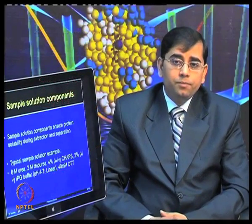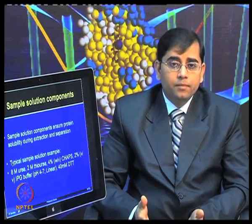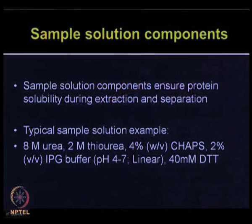The sample solution components ensure that protein solubility is good during extraction and separation. A typical sample solution for gel-based 2DE application includes 8 molar urea, 2 molar thiourea, 4% CHAPS, 2% IPG buffer, 40 millimolar DTT, as well as a few other small components depending upon your sample type.